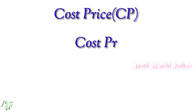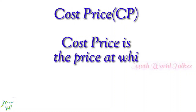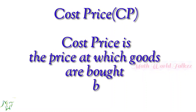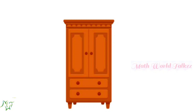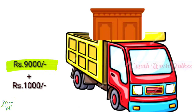The first term is cost price. Cost price is the price at which goods are bought by a merchant or retailer. For example, if a merchant buys a cupboard from a wholesale dealer at the price of Rs. 9,000 and he spends Rs. 1,000 in transportation charges, the total cost he incurred is the cost price of that product.